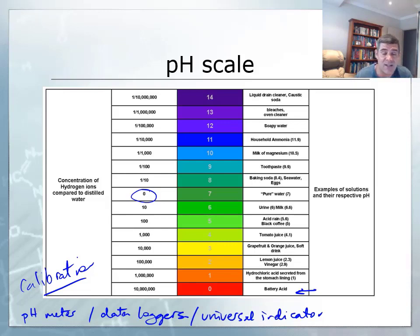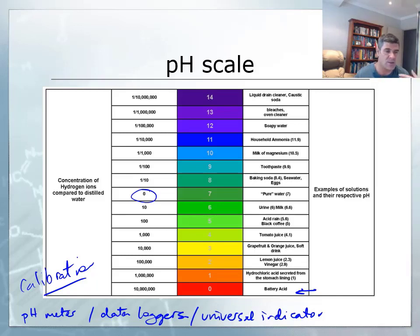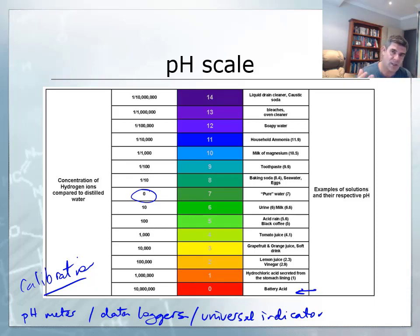We'll look at how we calculate pH later in this part of the module. You'll see that the concentration of hydrogen ions in distilled water is not 0, but this just gives you a bit of an idea. So, 10 times as many hydrogen ions in a pH of 6 as there is in water, 100 times in a pH of 5, and one tenth in a pH of 8.